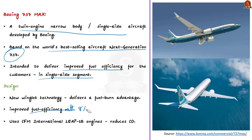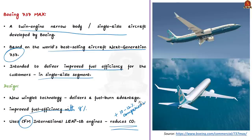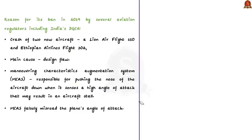The Boeing 737 MAX is powered by CFM International LEAP-1B engines, which reduce CO₂ emissions by an additional 10 to 12 percent compared to existing fuel-efficient single-aisle aircraft. Several aviation regulators worldwide, including the US Federal Aviation Administration and India's DGCA, ordered the grounding of the Boeing 737 MAX in 2019 following the crashes of Lion Air Flight 610 and Ethiopian Airlines Flight 302 within five months of each other.